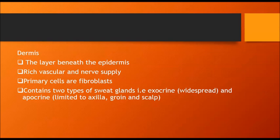The middle layer, the dermis, is the layer beneath the epidermis. In contrast to the epidermis, it has a rich vascular and nerve supply. The primary cells are the fibroblasts, and it contains two types of sweat glands: the eccrine and the apocrine.